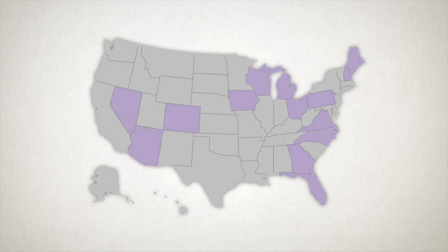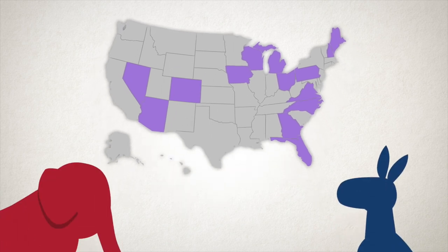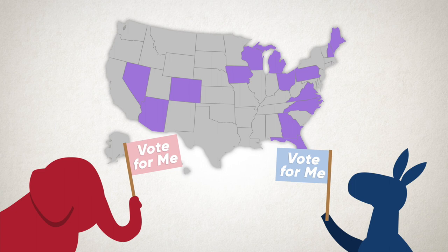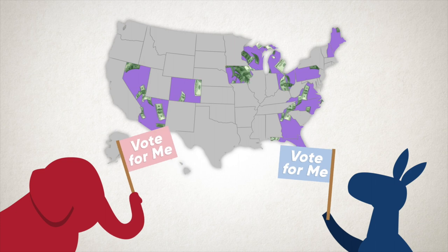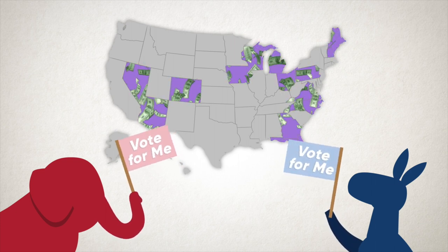Campaigns end up focusing almost entirely on swinging these states to their side. In 2016, there were 14 swing states. These 14 states ended up hosting 94% of all candidate campaign appearances during the general election, and during the last month of the election, 99% of all campaign ad spending happened in just these 14 states.